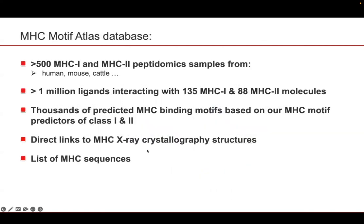Here is a summary of what we provide in the MHC Motif Atlas. We collected more than 500 samples from different species that resulted in more than 1 million ligands interacting with a few hundred MHC class 1 and 2 molecules. We provide thousands of predicted MHC binding motifs based on our MHC motif predictors for class 1 and class 2. We also provide direct links to MHC X-ray structures and a list of MHC sequences available in our database.